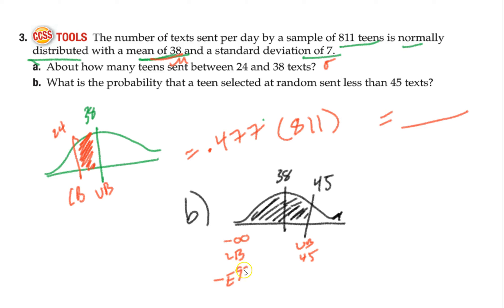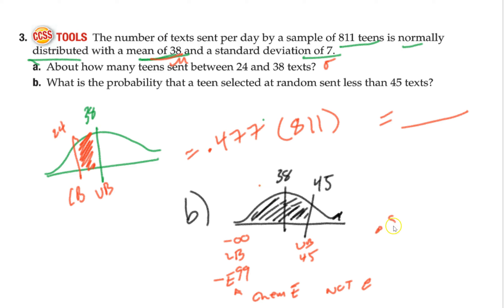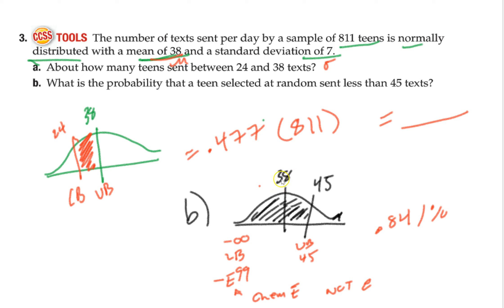Hit enter, and you get about 0.841 — an 84% chance that a randomly selected teen sends less than 45 texts. You can verify this by the empirical rule: 45 is exactly one standard deviation above 38, so 0.50 plus 0.34 equals 0.84 — the same answer. Some problems you can do both ways — empirical rule or calculator — but some can only be done with the calculator, which we'll talk about next. Normalization, which we'll skip, is covered more in stats or IB.